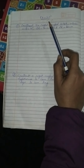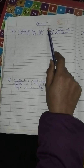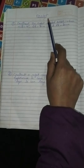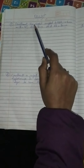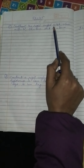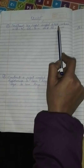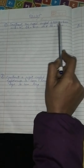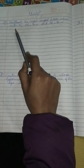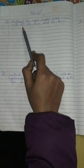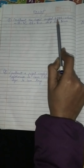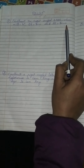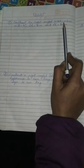Good morning class 7. Today we will start exercise 10.5. Construct the right angle triangle PQR where angle Q is equal to 90 degrees, QR is 8 cm and PR is 10 cm.